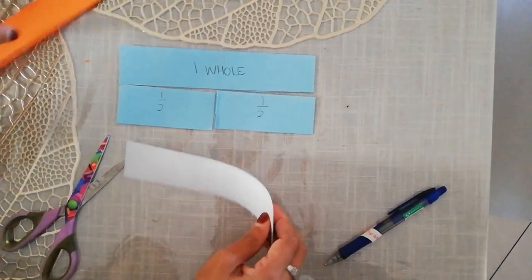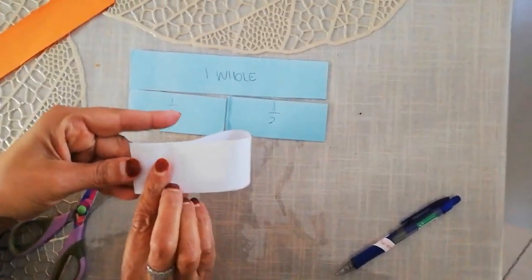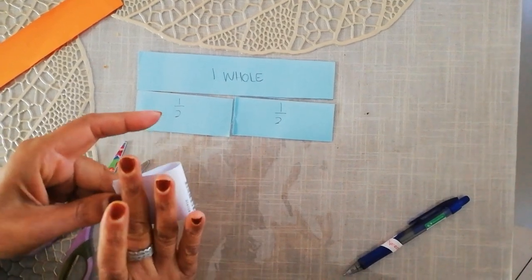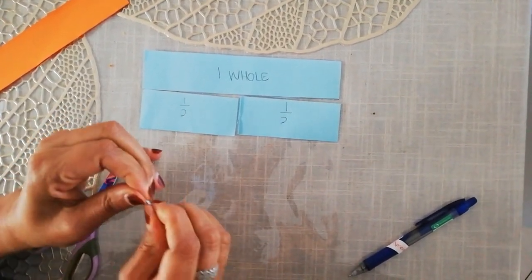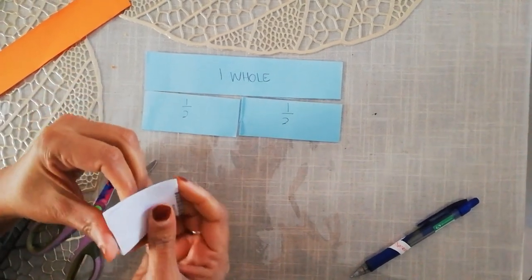I take my next strip of paper, I make it into half, and I make it into half again. That will give me quarters. And then I cut it up.